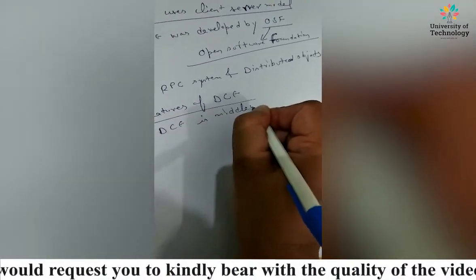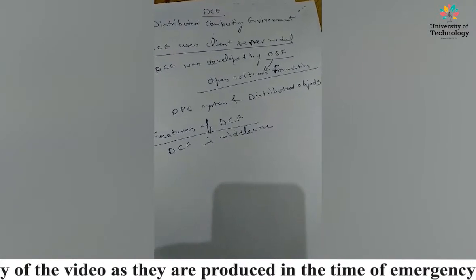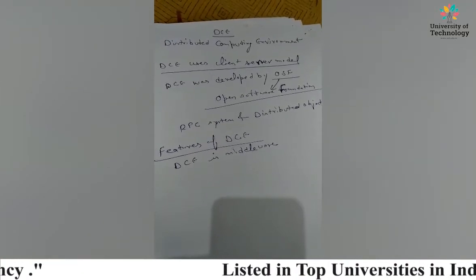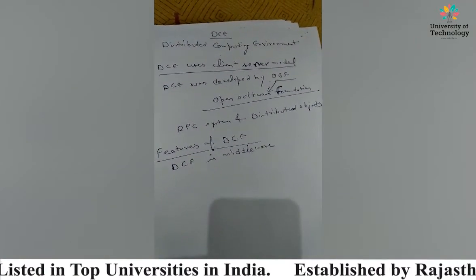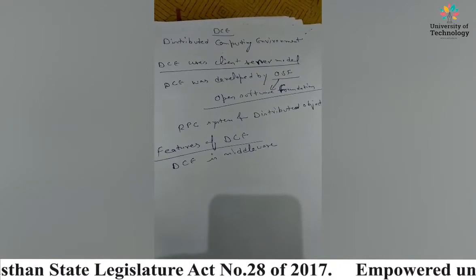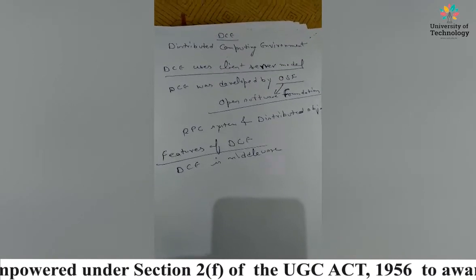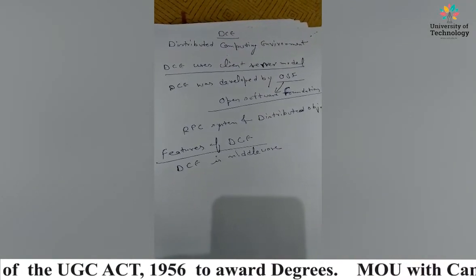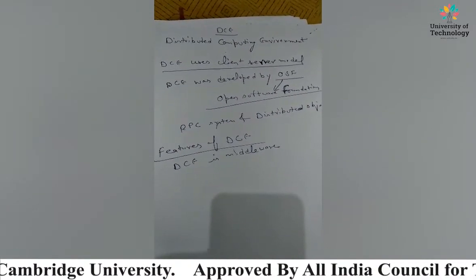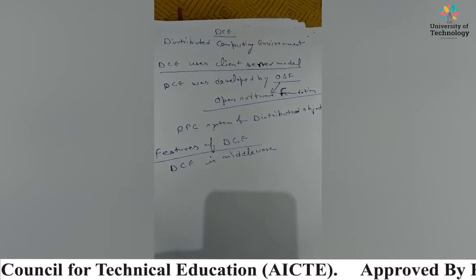DCE is middleware that provides abstraction between an existing network of systems and distributed objects as components of a distributed application. Users can work on distributed applications after installing DCE on a collection of machines without disturbing existing non-distributed applications. DCE, distributed by the Open Group, provides only source code for implementation, and most configuration is done by the vendor-specific environment.